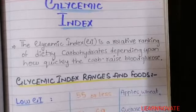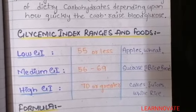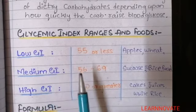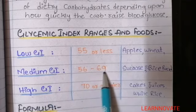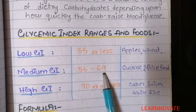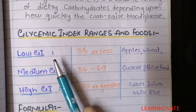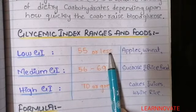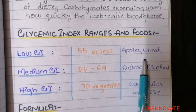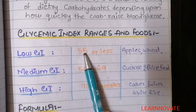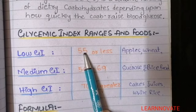Now, coming to the glycemic index range and the foods that contain high or low glycemic index. The normal glycemic index range is about 56 to 69. We should eat foods with a normal glycemic index frequently. The glycemic index less than 55 is considered low, and foods that contain a low glycemic index include apples and wheat. These are good foods to eat more because they will not shoot your blood glucose level.